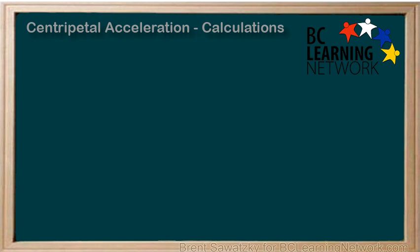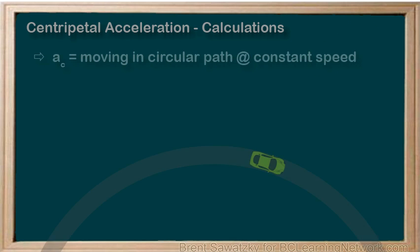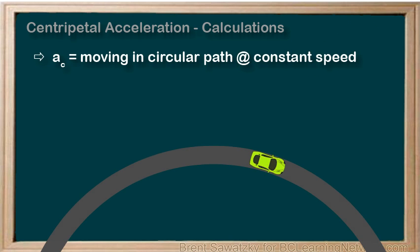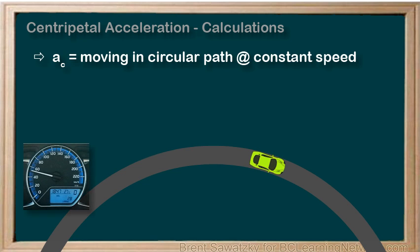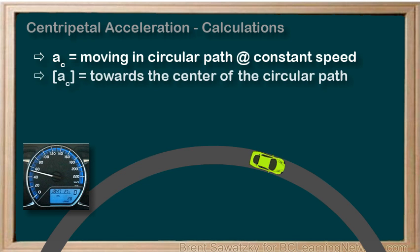At this point, we already know a couple things about centripetal acceleration. It is the acceleration of an object which is moving in a circular path at a constant speed. And two, the direction of centripetal acceleration is always towards the center of that circular path.